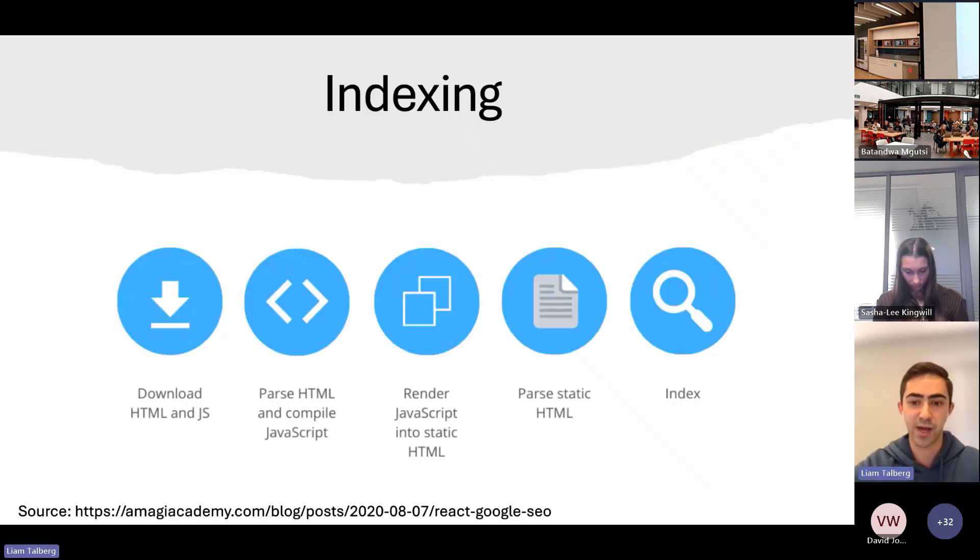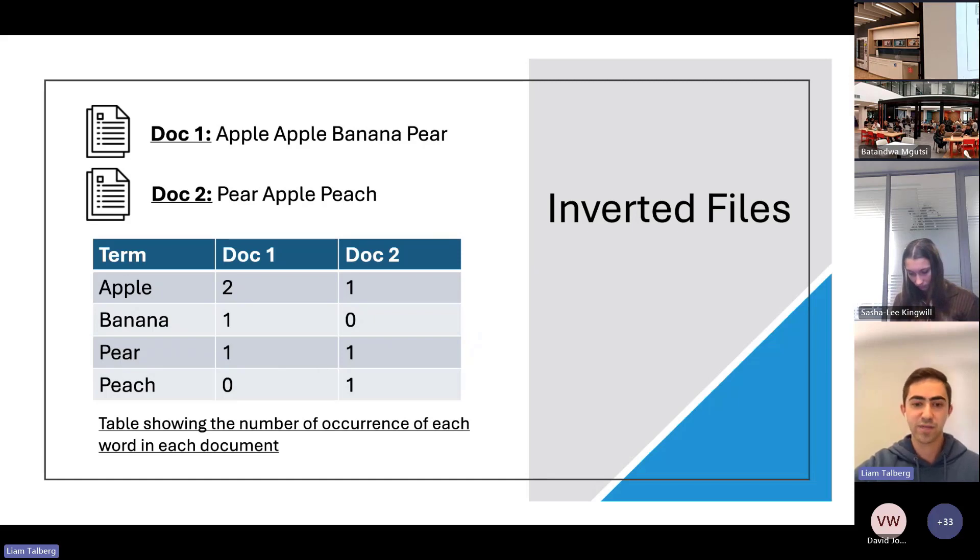Once a search engine has crawled all the websites, it needs to store this information in a manner that is efficient to search through. This process is called indexing. Through indexing, all the documents crawled are reduced to a set of terms contained within them. This process involves scanning through the information and analyzing it, focusing on key contents such as text, videos, images, and metadata. This is often done by focusing on key HTML elements such as the titles, headings, or alt tags for media content.